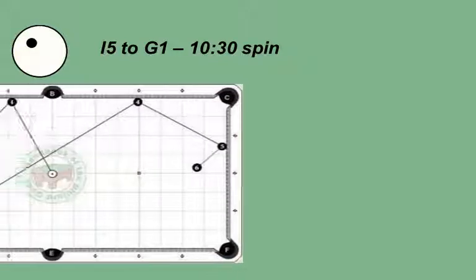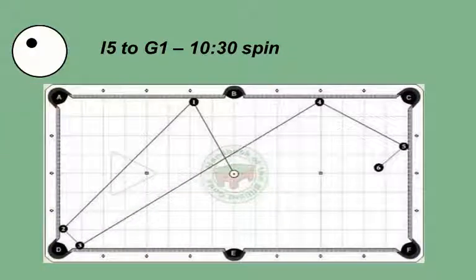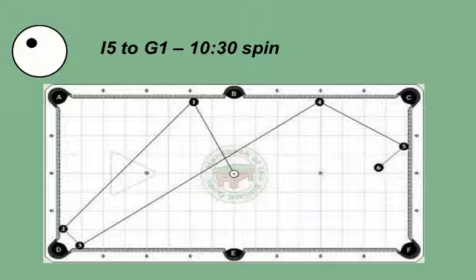This is the 10:30 spin from the I5 position. The running English on the cue ball comes off the first rail and rolls towards the corner pocket. The ball comes off the second and third rail with the running English. It then travels diagonally up table. If you are kicking to a ball in this area, your opponent will be surprised that you are able to get there using this path.